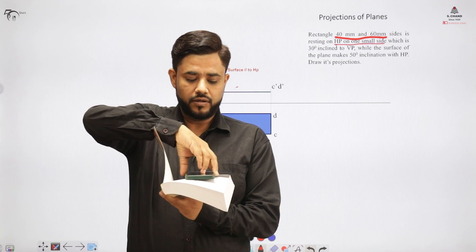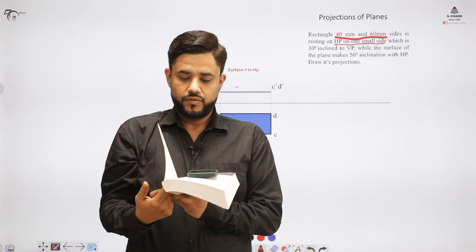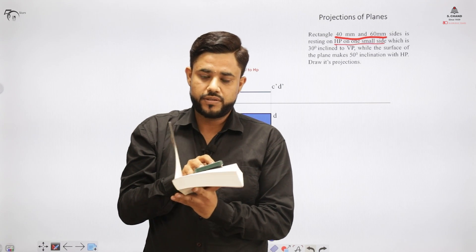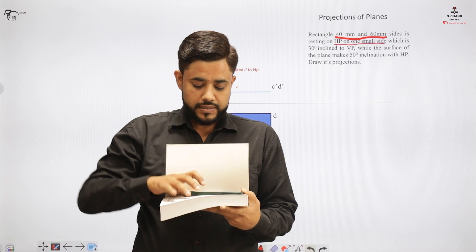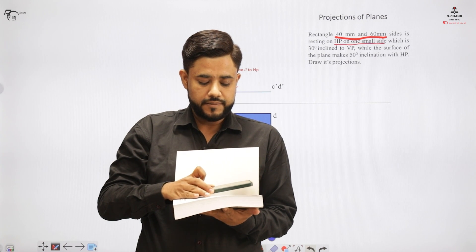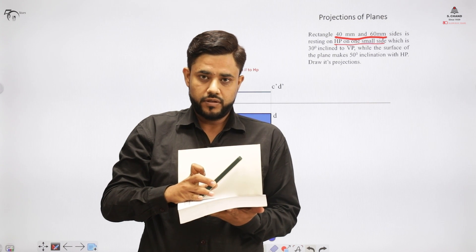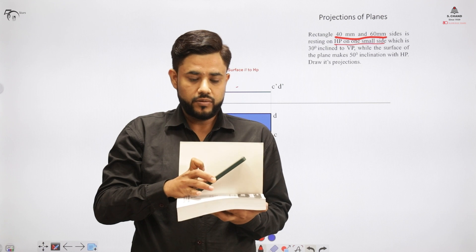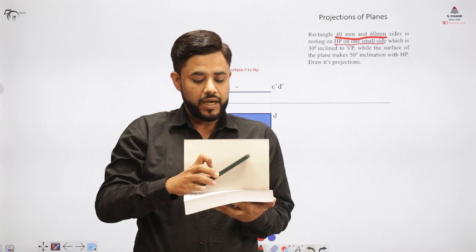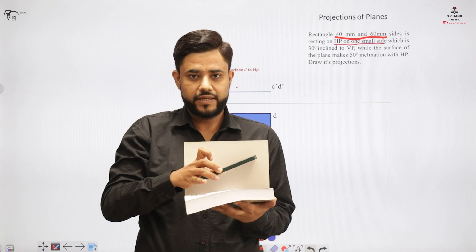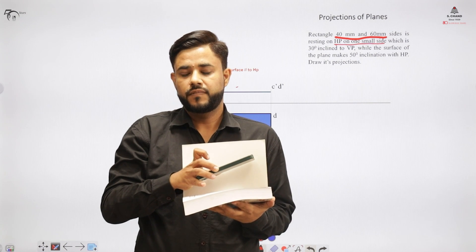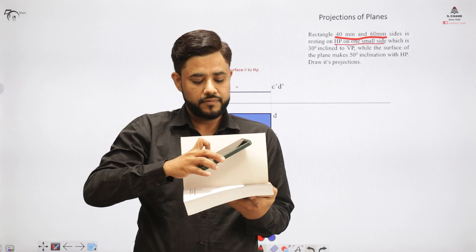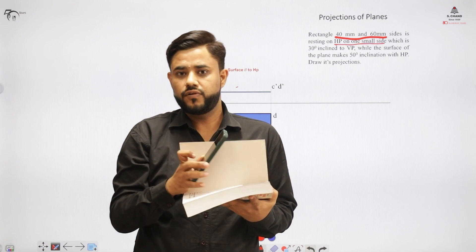If I look at the object from the front, I'll get the front view, which is a line, and from the top I'll get the top view, which is a rectangle. But if the surface of this plane is inclined to the horizontal plane at an angle theta, then looking from the front I'll get an inclined line in the VP, and I'll get a shorter cross-section surface — a rectangle on the horizontal plane. When there is also an inclination with the vertical plane, we get a reduced cross-section rectangle on both VP and HP, making it very difficult to draw both directly.